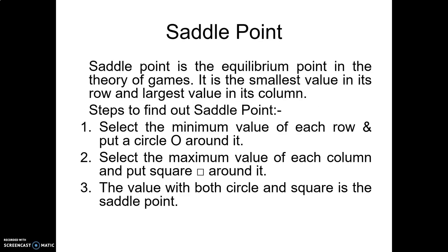Now we discuss the saddle point. The saddle point is the point of equilibrium in the theory of games. It is the smallest value in its row and the largest value in its column. To find the saddle point: first, select the minimum value of each row and put a circle around it; then select the maximum value of each column and put a square around it. A value with both a circle and a square is called the saddle point.